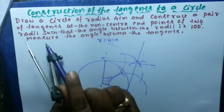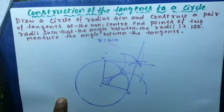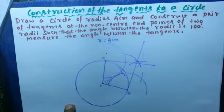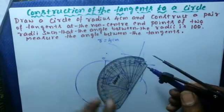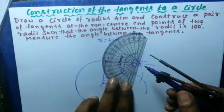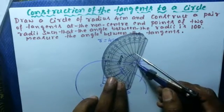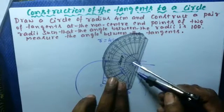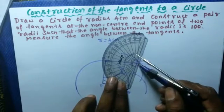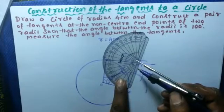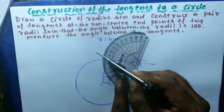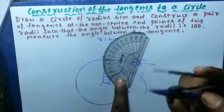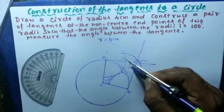This completes the construction of tangents at the ends of the two radii. We are asked to measure the angle between the tangents where they intersect. Place the protractor on the intersection point with the line aligned — measure this angle. You will see it is 80 degrees.